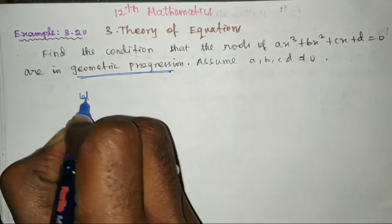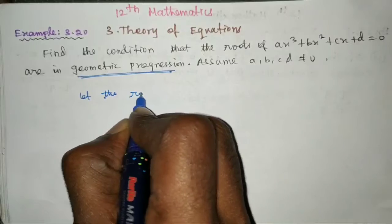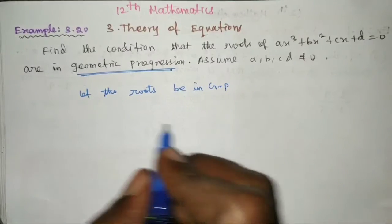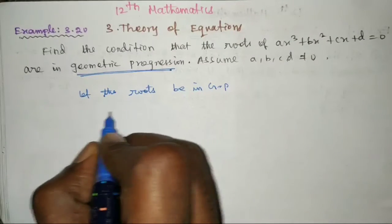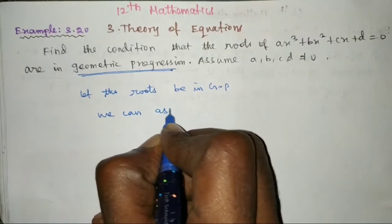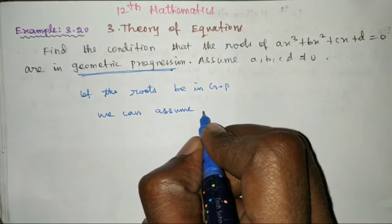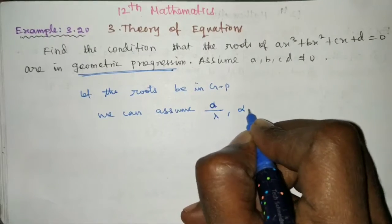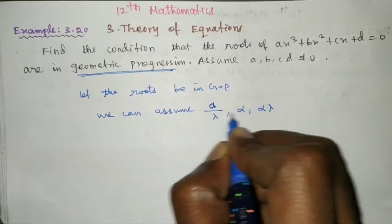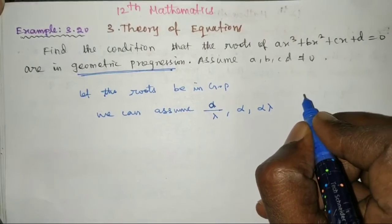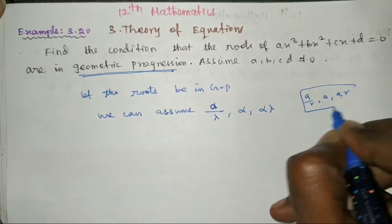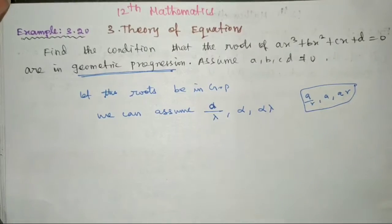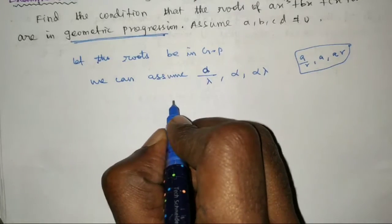Let the roots be in GP. For geometric progression with three roots, we can assume the roots as α/λ, α, and αλ.